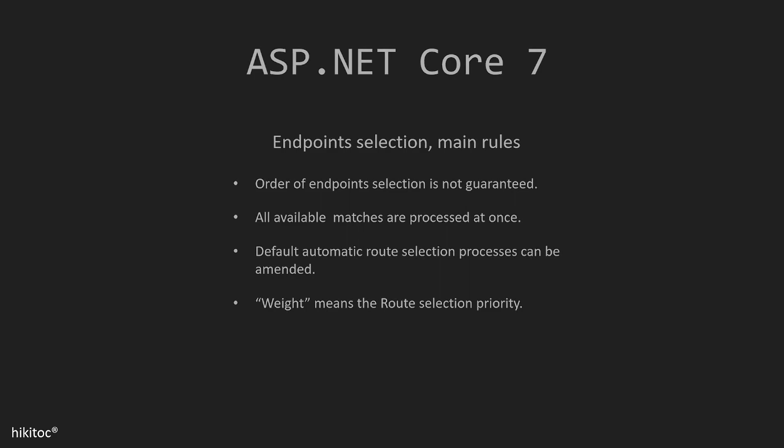A few lessons ago, I talked about how in .NET Core 7 endpoints are chosen using the best route selection. So, what exactly does best route selection mean? First, in ASP .NET Core 7, the sequence of endpoint selection is not guaranteed. There is a matching pattern, but due to your code, certain effects can occur, so a complete 100% match might not always occur.